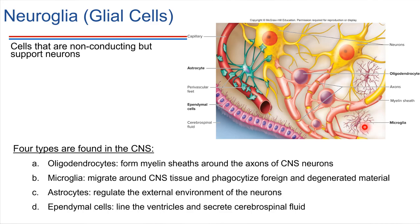These spidery-looking ones are called microglia. Microglia are interesting because they can actually move — they can migrate around through this tissue and phagocytize things. They can eat things that aren't supposed to be there, so they help to clean up the environment.